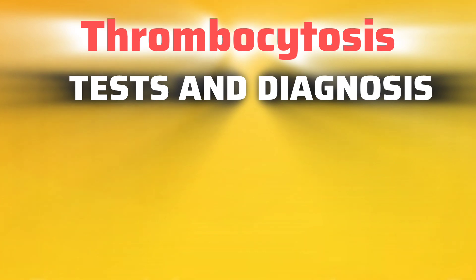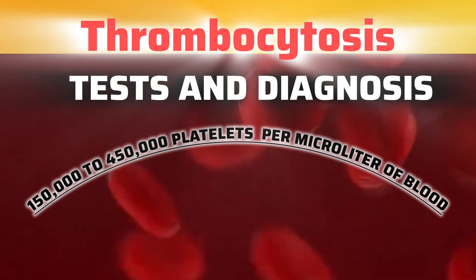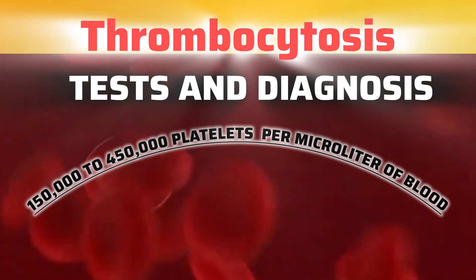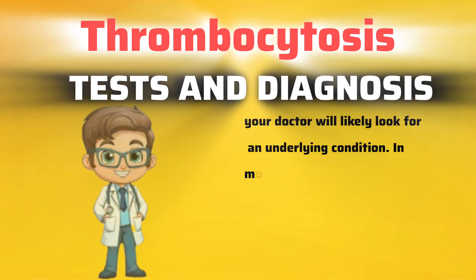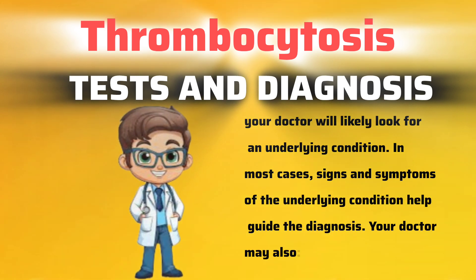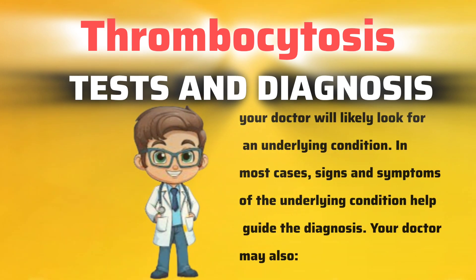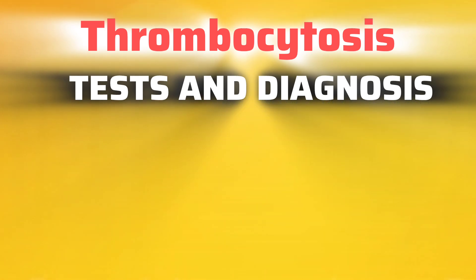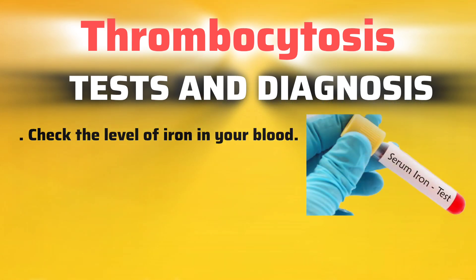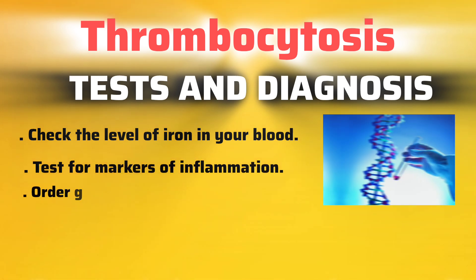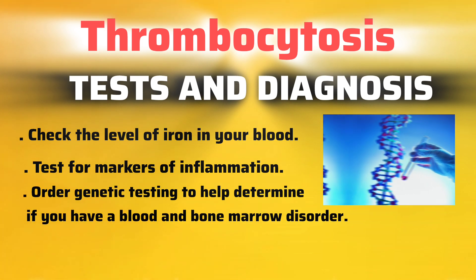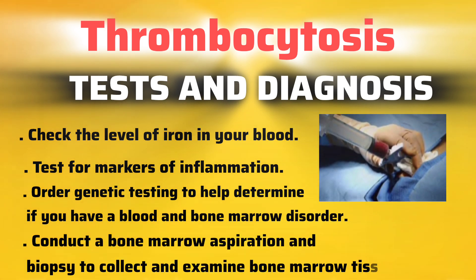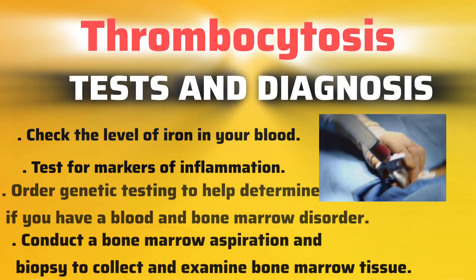A normal range for platelets is 150,000 to 450,000 platelets per microliter of blood. If your blood count is above 500,000, your doctor will likely look for an underlying condition. In most cases, signs and symptoms of the underlying condition help guide the diagnosis. Your doctor may also check the level of iron in your blood, test for markers of inflammation, order genetic testing to help determine if you have a blood and bone marrow disorder, and conduct a bone marrow aspiration and biopsy to collect and examine bone marrow tissue.